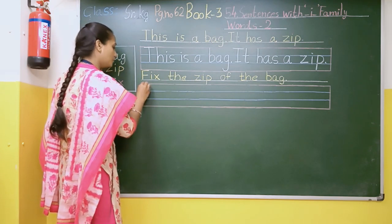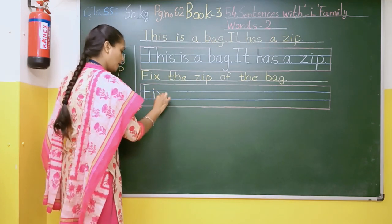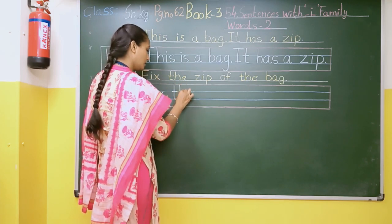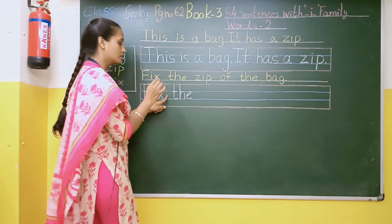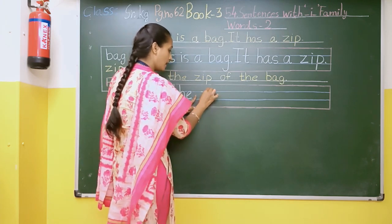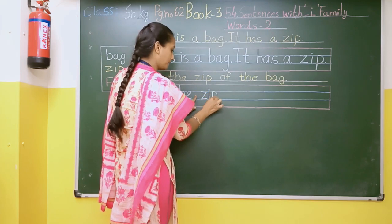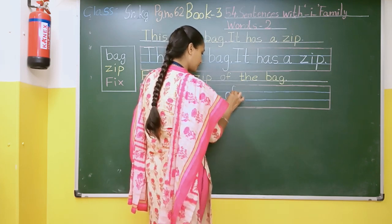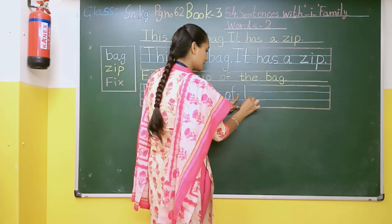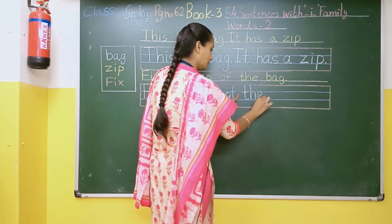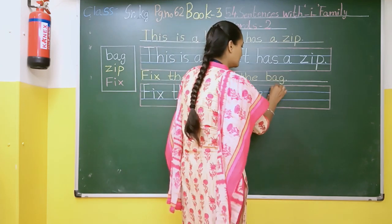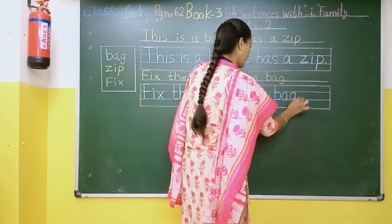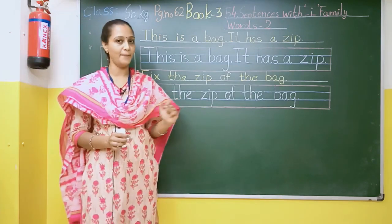Now I will write. In the same way you will also write. F-I-X, fix. Then keep one finger distance and write T-H-E, the. Fix the. Then keep one finger distance and write Z-I-P, zip. Then O-F, of. Then T-H-E, the. Then B-A-G, bag. Fix the zip of the bag.